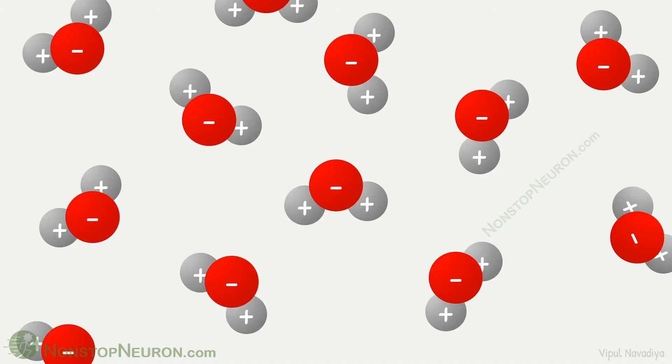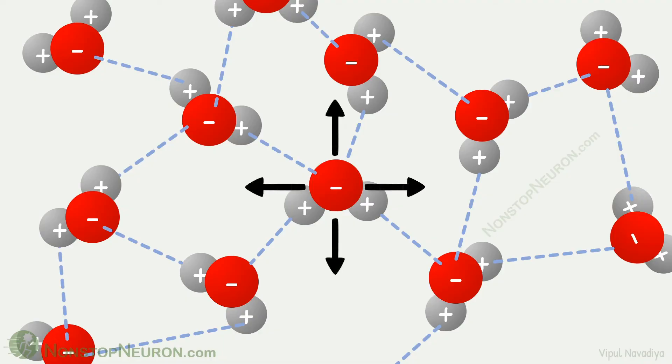In water, there are multiple such charged molecules. Here positively charged hydrogen atom of one water molecule attracts negatively charged oxygen atom of other water molecule. Such attraction is occurring throughout the water phase. This is all we wanted to know in chemistry part. Take home message from this discussion is, water molecules are attracted by surrounding water molecules.